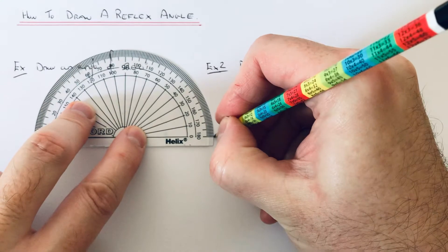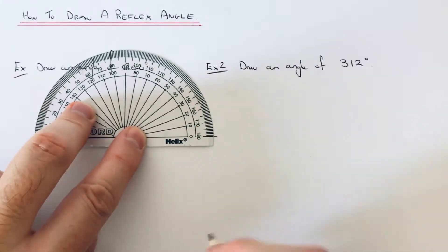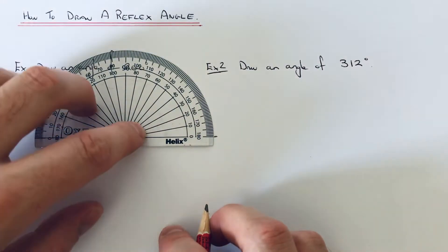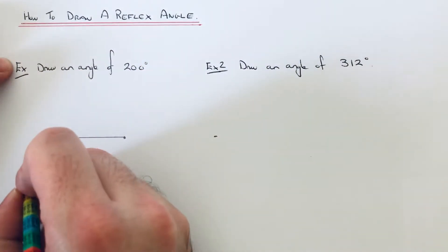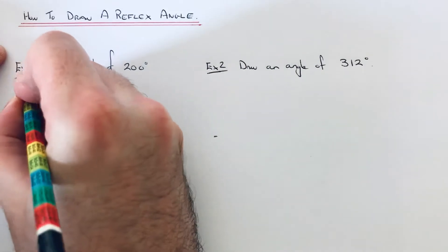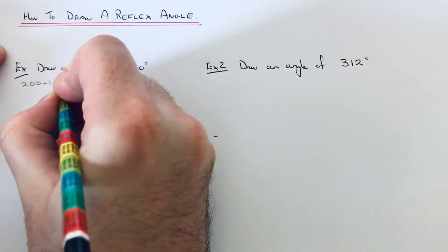Your protractor only goes around to 180 degrees, so I'm going to put a little marker here so we know it's 180 up to there. Then we're going to measure the extra bit. To get the extra bit you just need to take 180 off 200, which is 20 degrees.